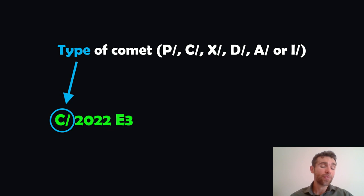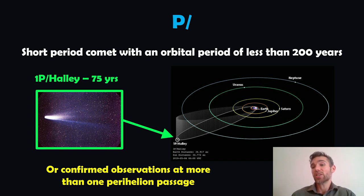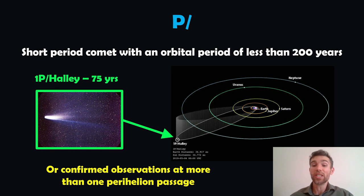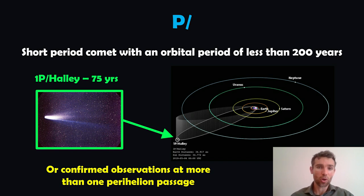The very first part of that name is the type of comet that it is. Here we've got C, which kind of just means comet. You've got P, which refers to short period comets. These have orbital periods less than 200 years, so they're classified as periodic comets. They've had multiple passages — we've seen them come into the inner solar system multiple times. They've been confirmed multiple times at perihelion passage, when they come closest to the Sun. An example here: 1P Halley has approximately a 75-year orbital period. That's a short period comet.